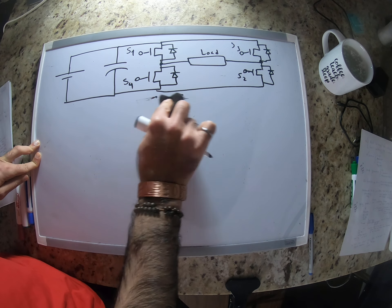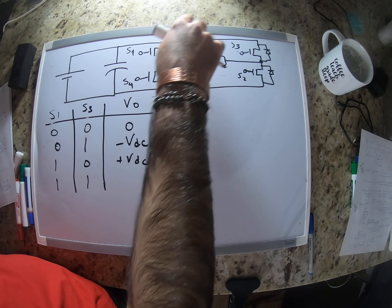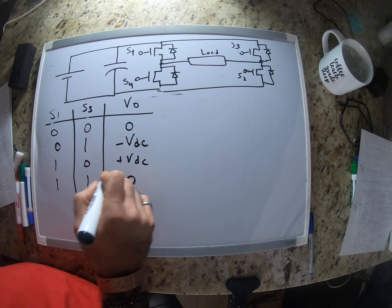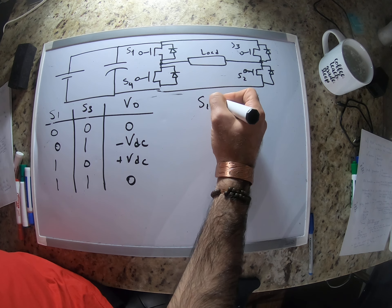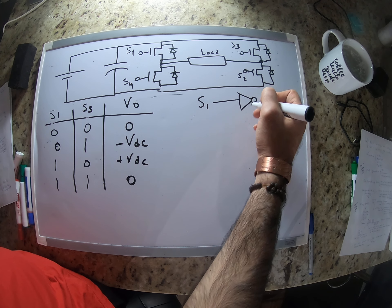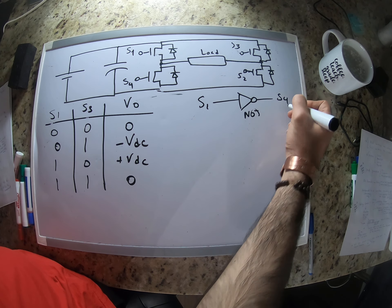Then 1, 0, we would have positive VDC. And 1, 1, when both S1 and S3 are on, we're going to have a short circuit across the load, so it would be 0. As mentioned, this is a NOT gate, so this is what we assume.